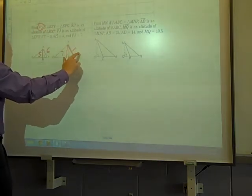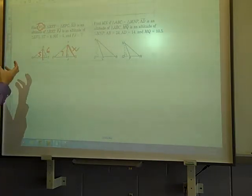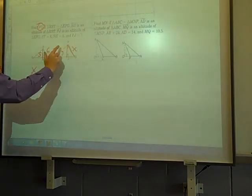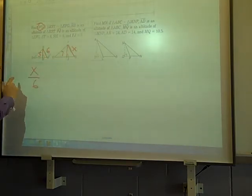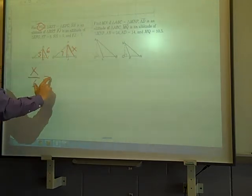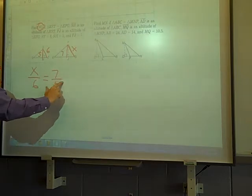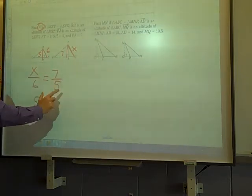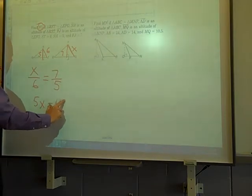And FG is what we want to find. So if I put x over 6, those are corresponding sides that the altitudes follow that same. So x over 6 equals 7 over 5, and 5x equals 7 times 6, which is 42.